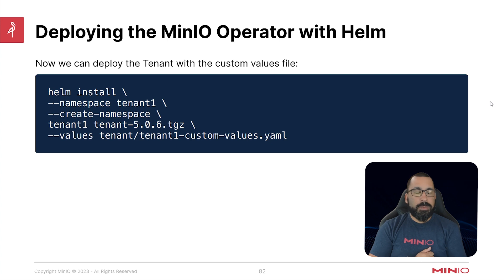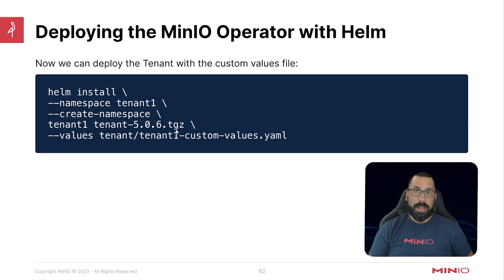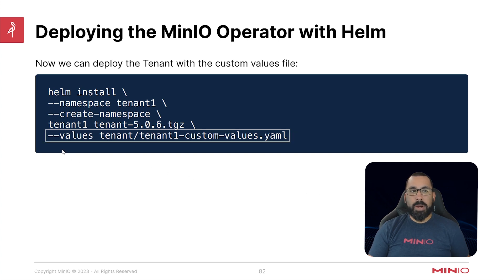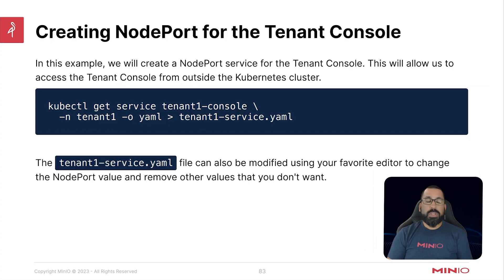Now that we've customized the values file, we can deploy the tenant with it. We run helm install --create-namespace tenant1, call this deployment tenant1, refer to that TGZ file we downloaded — Helm will automatically unpack it and use it for the deployment. We specify that instead of using the default values file built into it, it should use the values file we created: the tenant1-custom-values file. Once done, everything should be up and running. We can do kubectl get pods on the tenant1 namespace and see all the pods up and running.